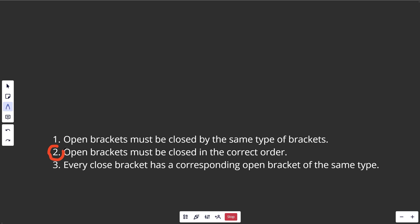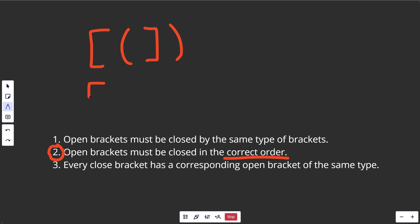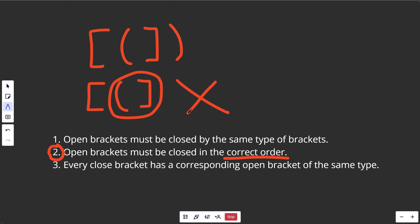For rule number two, open brackets must be closed in the correct order. This example is technically closing everything and all types are matching — we have an open square closed with square, and an open round closed with round. However, we start with a square bracket, then open a round, and when we encounter the next closing bracket, we need it to close the round, but we actually close with a square. So we return false.